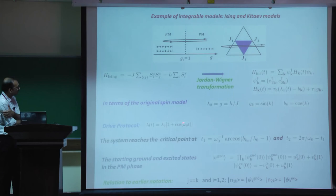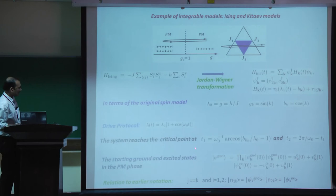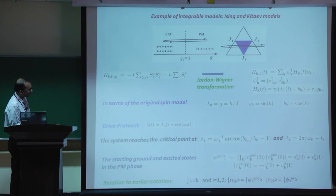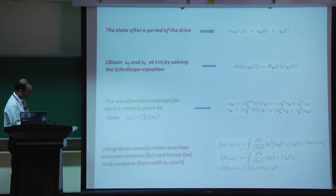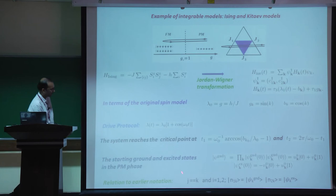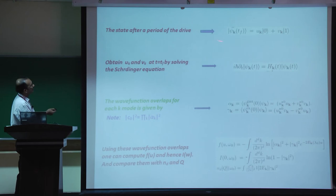Applying this to the 1D Ising model, which by Jordan-Wigner transformation reduces to a quadratic fermion form: we choose a drive protocol lambda(t) that is periodic, so the system starts from the paramagnetic phase and goes back. After one period, the state is expanded in the ground and excited state basis for each k, and |c_0|^2 = product over k of |alpha_k|^2. From this one computes both the rate function and the Laplace transform coefficient.